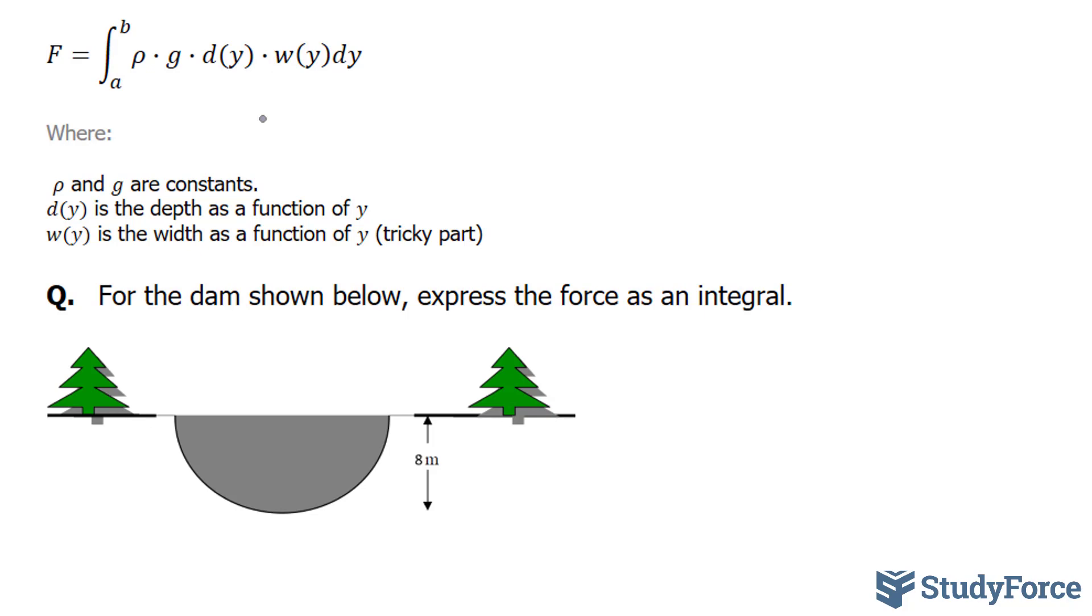This time, we have to find what w at y is because we have a semicircle and we haven't been told the width. So we have to come up with a formula that represents the width, and then place that formula into here. Let's see how we can do this.